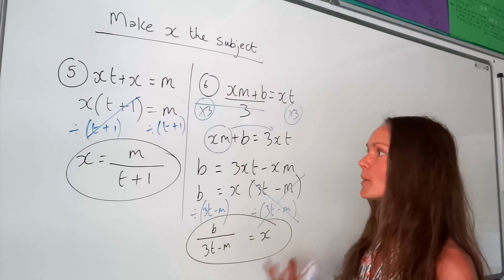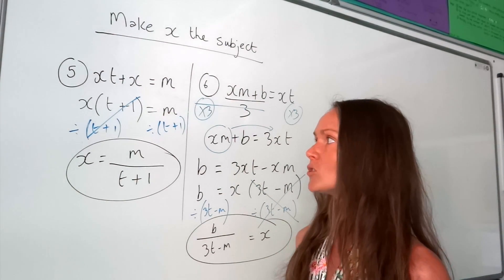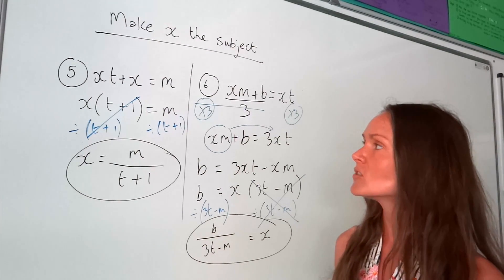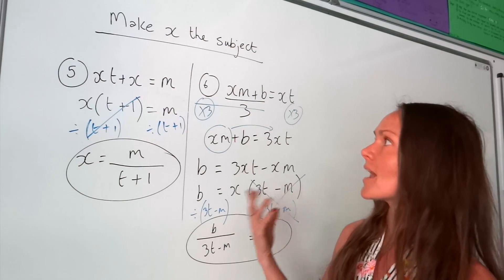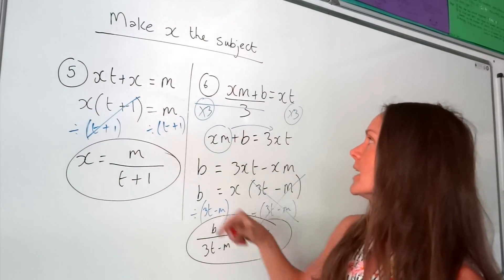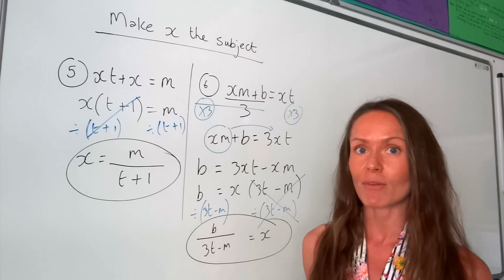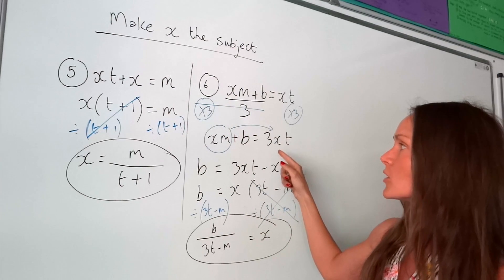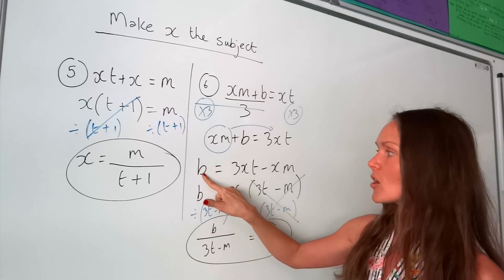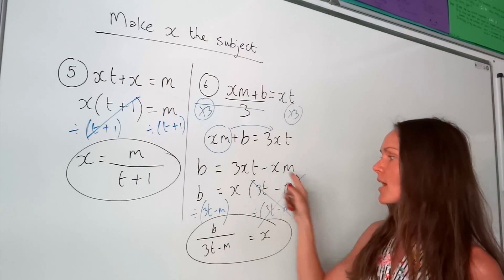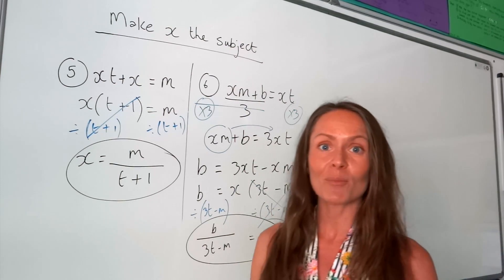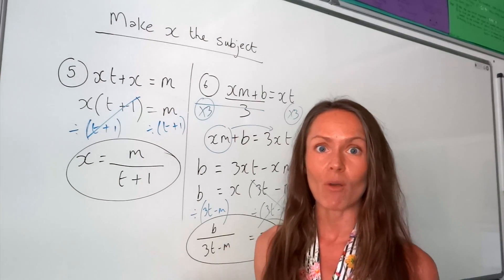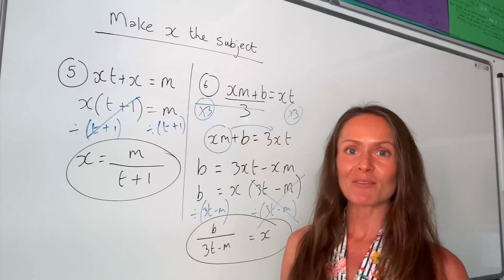So if you're a bit rusty on factorising, it might be a good idea to brush up on that. With these tricky challenge questions, if you've got more than one x term and you're making x the subject, you need to factor out that x in order to separate it from everything else. If the x terms aren't already on the same side, that's the first job — put x terms on one side and non-x terms on the other, before you do the factorising part. It's the same idea if you're making y the subject — it just means rearranging to get y equals. Goodbye.